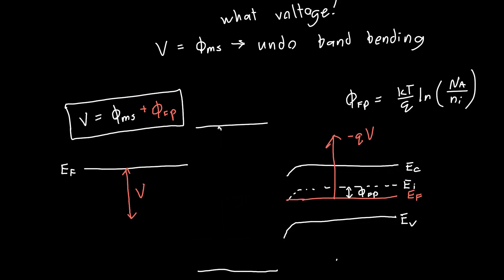Applying a voltage equal to φ_ms + φ_fp puts us in depletion mode. This is not exactly the full story — in practice we need an even larger voltage because some voltage drops across the oxide and some across the semiconductor. But the general idea is to achieve just the right amount of band bending so that near the oxide-semiconductor interface, the intrinsic Fermi energy equals the Fermi level.